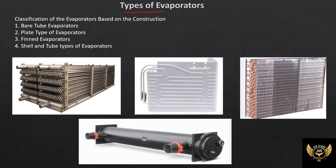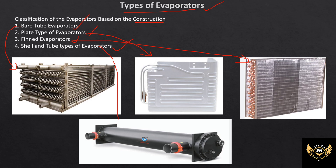So, types of evaporators. The classification of evaporators based on construction includes: bare tube evaporators, plate type evaporators, finned evaporators, and shell and tube type evaporators. You can see the images — first is bare tube, second is plate type, third is finned type, fourth is shell and tube type.